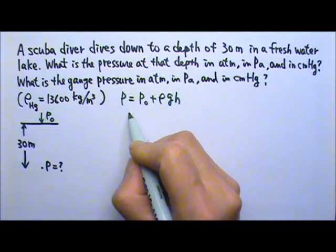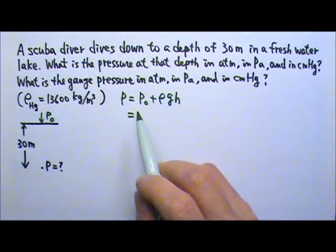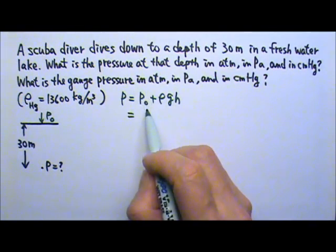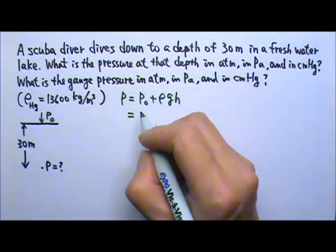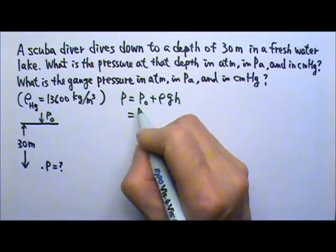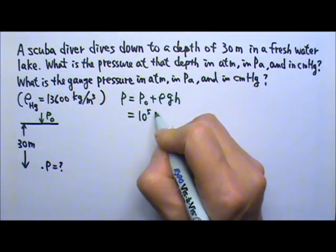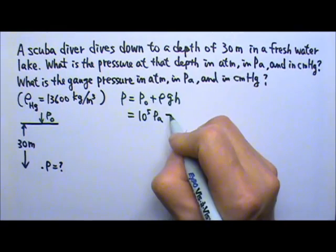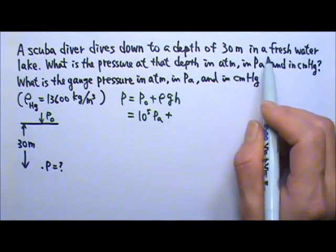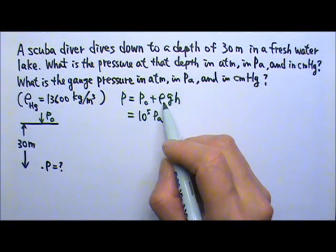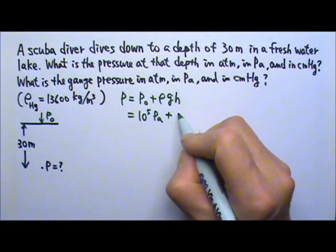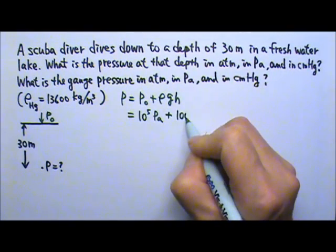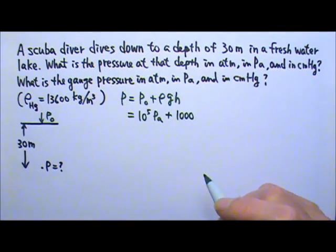Let's first find this pressure in pascals. If a problem does not specify, we're going to use the standard atmospheric pressure for P₀, which means it's 1 atmosphere, 10⁵ pascals. This is a freshwater lake, so the density is the density for water, which is, if you remember, 1,000 kilograms per meter cubed.